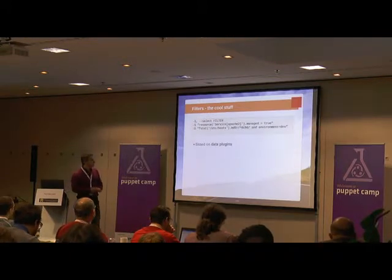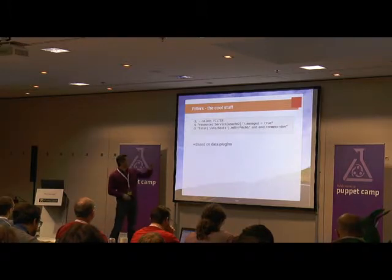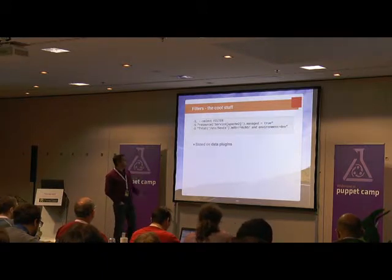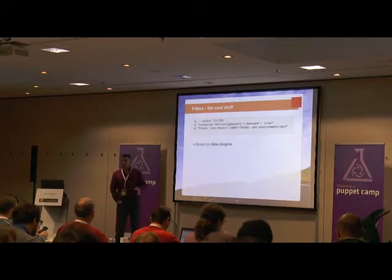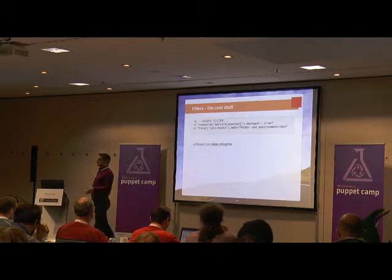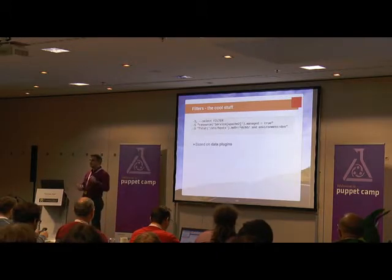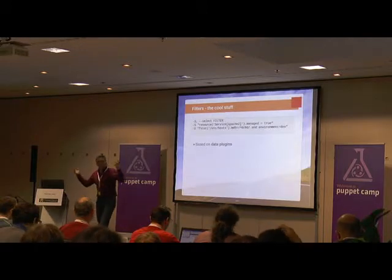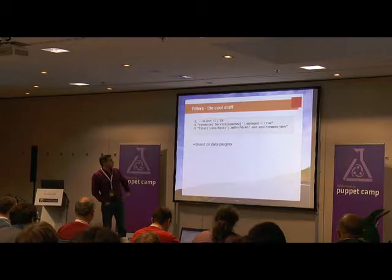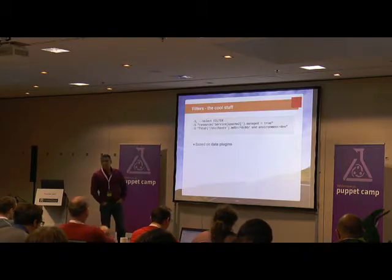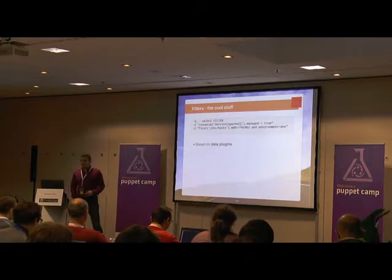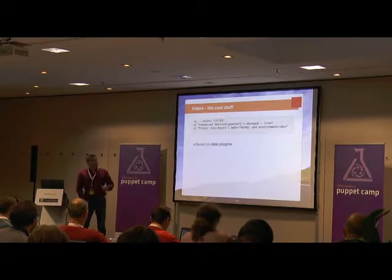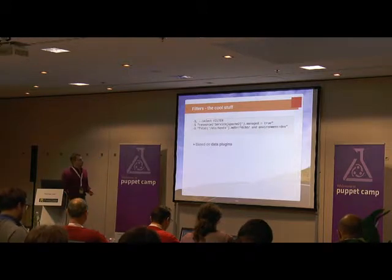The coolest filter is the mselect filter — these are data plugins. They're pretty new, but there are already a lot of data plugins available. You could say: do something only on those nodes where Puppet is managing Apache. Or run Puppet with a specific tag, but only on those nodes where Apache is not managed by Puppet. There is an fstat data plugin telling you MD5 sums and other information about files. If Puppet destroys something, you can create a filter and say: do something only on those nodes that have that file with a modification time greater than something.